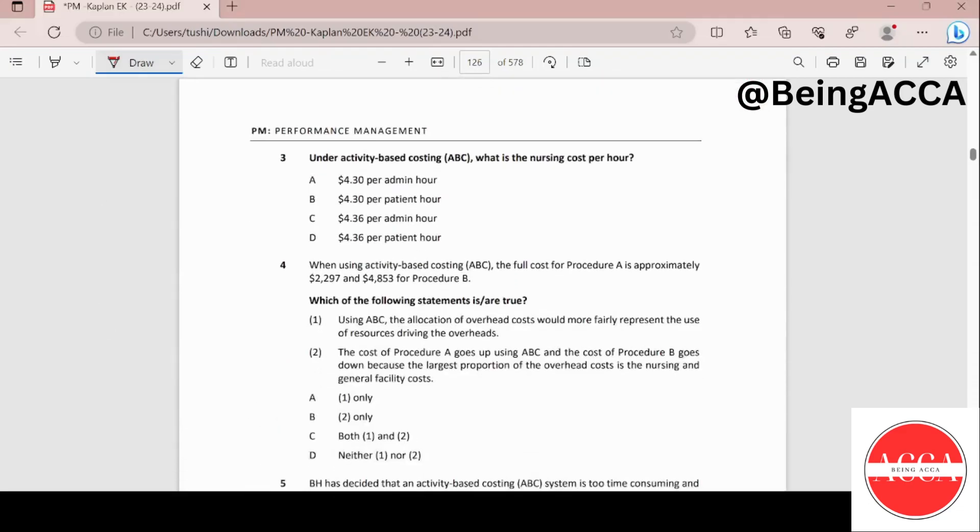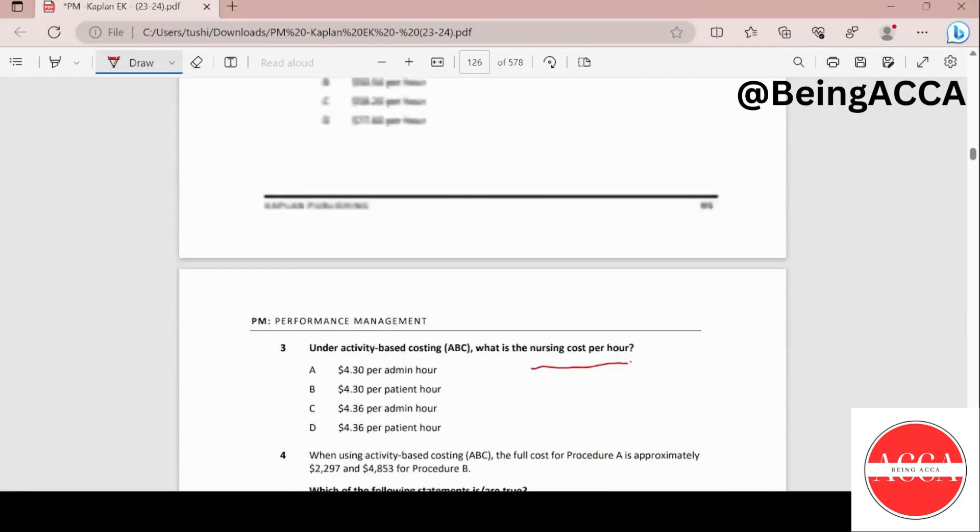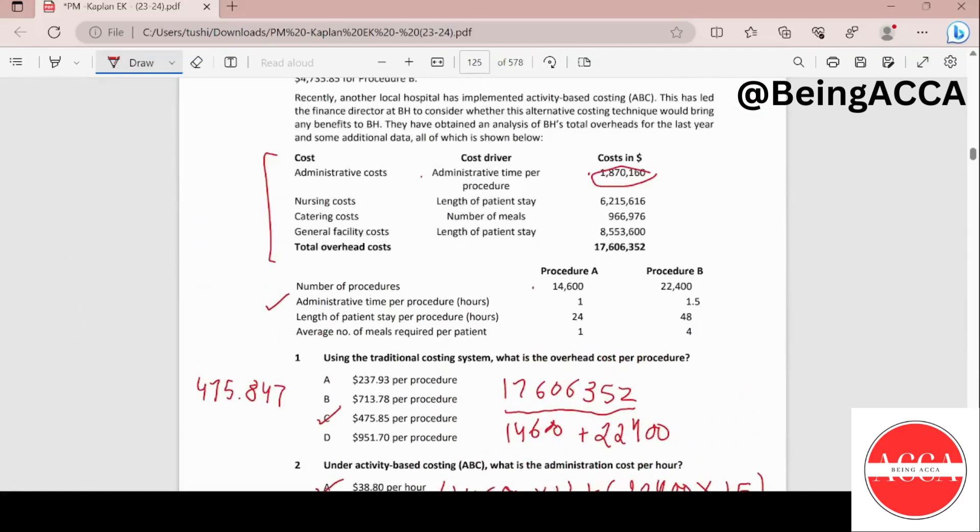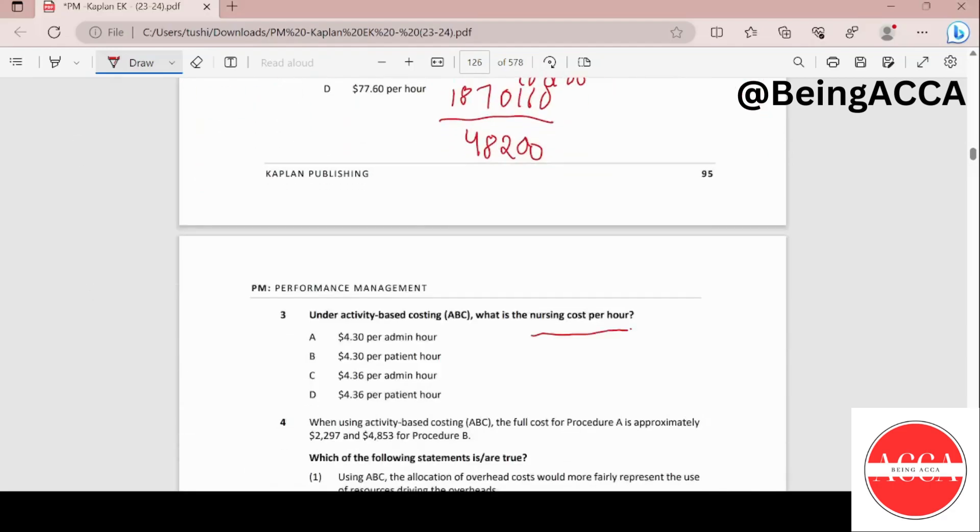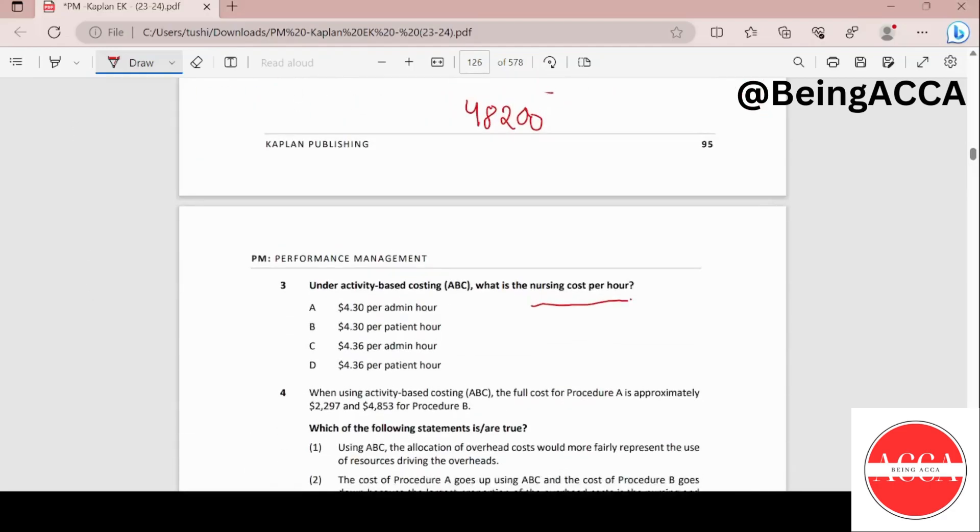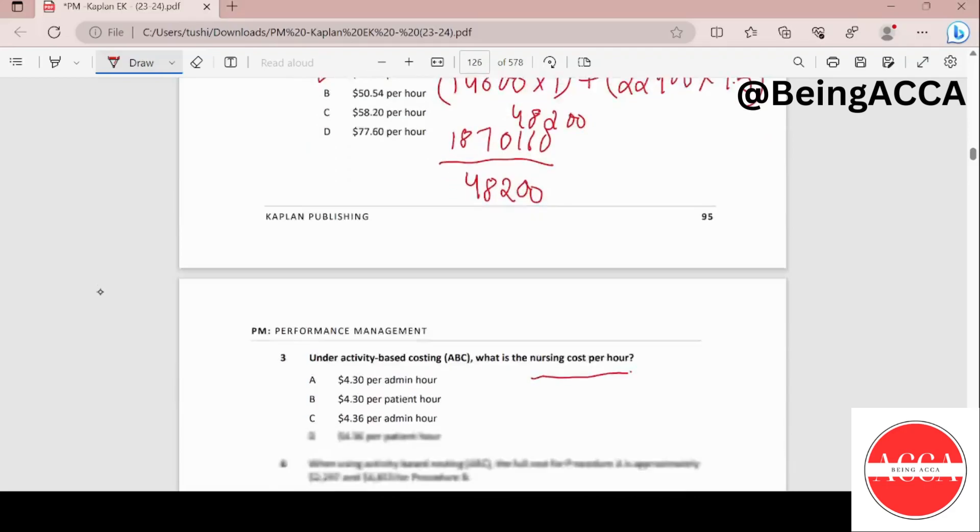Moving on, using activity-based costing, what is the nursing cost per hour? So nursing cost over here, this is the total nursing cost 6215616 and the cost driver is length of patient stay. So length of patient stay is given according to hours. For procedure A, it's 24 hours and for procedure B, it's 48 hours. So I'm just going to do the exactly same thing which we did in question number 2.